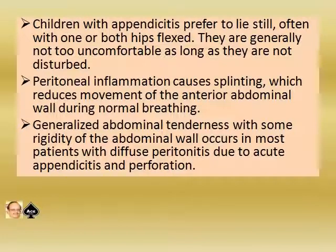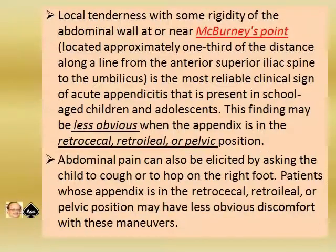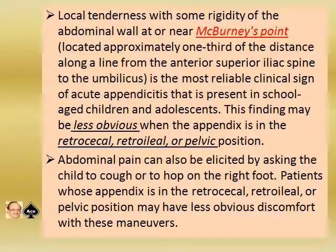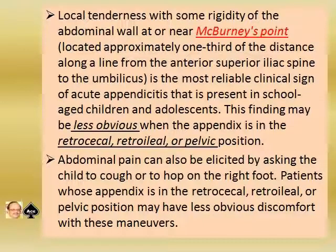Peritoneal inflammation causes splinting which reduces movement of the anterior abdominal wall during normal breathing. Generalized abdominal tenderness with rigidity occurs in most patients with diffuse peritonitis due to acute appendicitis and perforation. Local tenderness with rigidity at McBurney's point — located approximately one-third of the distance along a line from the anterior superior iliac spine to the umbilicus — is the most reliable clinical sign of acute appendicitis in school-aged children and adolescents. This finding may be less obvious when the appendix is in the retrocecal, retroileal, or pelvic position.